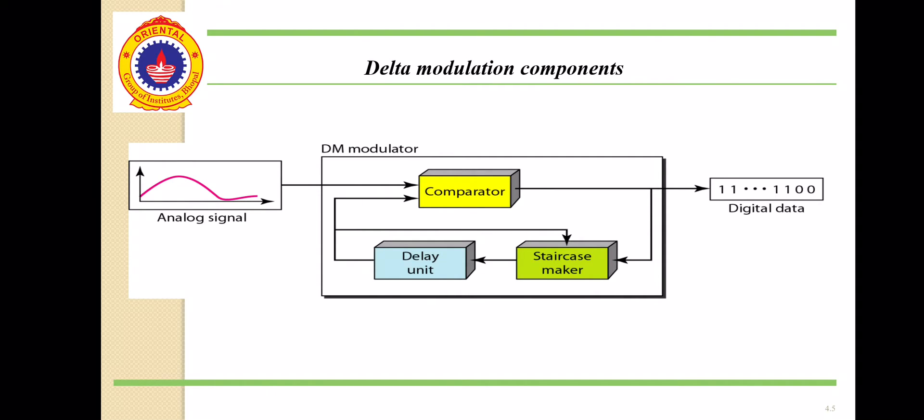This is Delta Modulation Transmitter. In the Delta Modulation Transmitter, important blocks are Comparator, Delay Unit, and Staircase Maker. In the Comparator, we give as input an analog signal and the delay of the staircase maker signal. We generate a staircase signal, delay it, and give it to the input of comparator. In the Comparator, the analog signal and the delayed output of the staircase signal are compared and digital signals are generated.